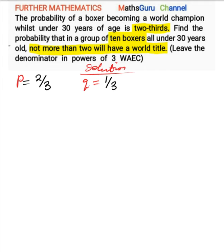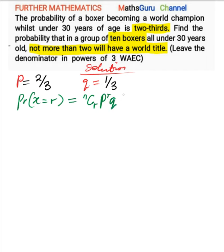This is a Bernoulli trial. In a Bernoulli trial, we have the probability of r successes equal to: n combination r, times p raised to the power of r, times q raised to the power of n minus r. This is what we use to resolve questions in binomial distribution that involve Bernoulli trials.